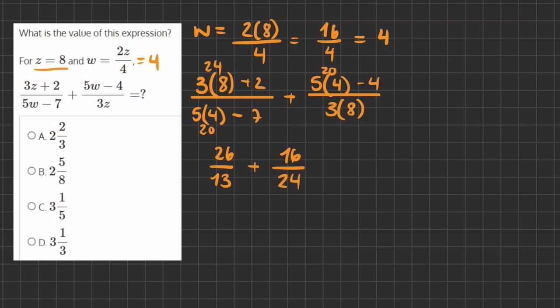Now we can simplify these two fractions. 26 divided by 13 will simplify into 2, because 2 times 13 will give us 26. Plus our second fraction, which we can simplify by dividing the numerator and denominator by 8.